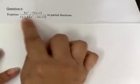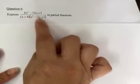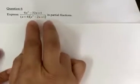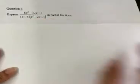So now we have to take a look at the denominator and see whether or not any of the terms can be further factorized. And indeed, this is the case for x squared minus 2x plus 1.